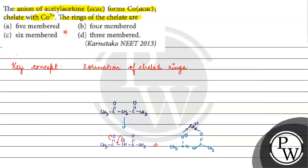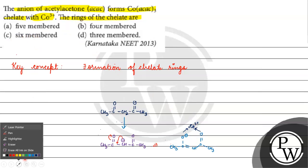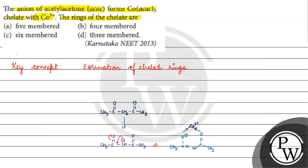6-membered. So the rings of the chelate are 6-membered. The correct answer for this question is option C. The acetylacetonate is bidentate — it has 2 donating sites — and it makes a 6-membered chelate ring. I hope you understood it well. Thank you and all the best.